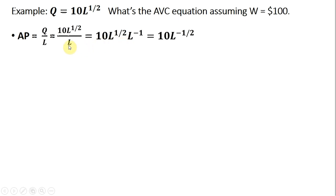Using the rules of exponents here, this L in the denominator, just move that up into the numerator, which is now expressed as L to the minus 1 power. Adding up these exponents, we have the average product of labor equals 10 times L raised to the minus 1 half power.